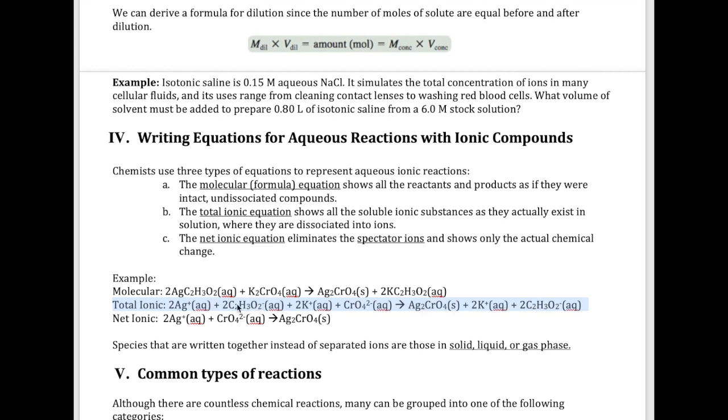Once I cross out all of those, what remains is just the silver, the chromate, and the silver chromate solid. This is what we call our net ionic equation. It's just the equation showing the ions that are involved in the reaction itself.